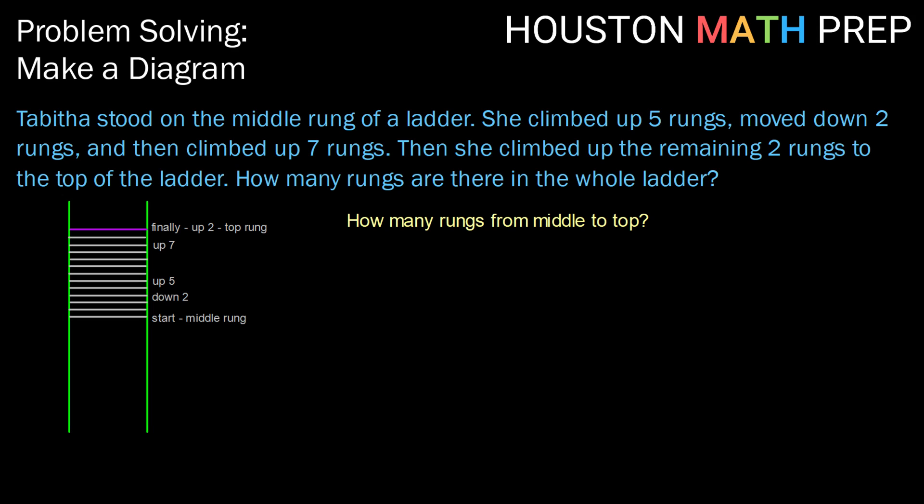So let's ask ourselves some questions. How many rungs based on our diagram are there from the middle to the top rung? Well, just counting out in our picture there, we notice that there are 12 rungs to get from the middle to the top. So knowing what we know about how middle works, if there are 12 rungs from the middle to the top, how many rungs should there be from the middle to the bottom? Middle implies the same amount up top, the same amount on bottom. So there are 12 rungs from the middle to the bottom.